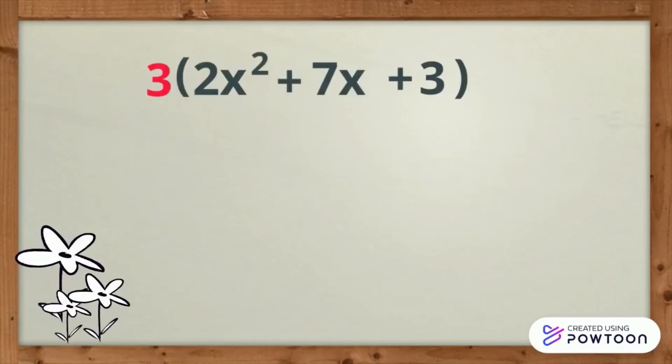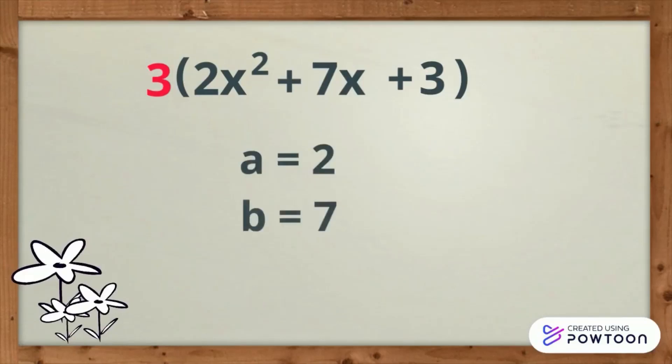Now, let us focus on the quadratic trinomial inside the parenthesis. We are to identify A, B, C. A is 2, B is 7, C is positive 3.